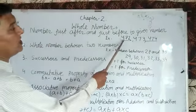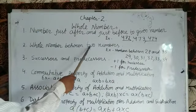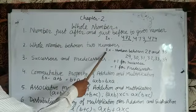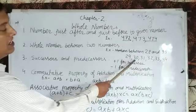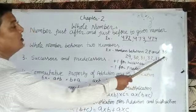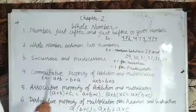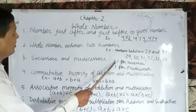The second concept is whole numbers between two numbers. For example, numbers between 28 and 35 are 29, 30, 31, 32, 33, and 34. So these are six numbers. The third concept is finding successors and predecessors.